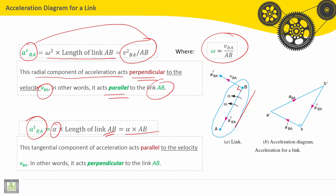This tangential component of acceleration acts parallel to the velocity V_BA. In other words, it acts perpendicular to the link AB. A^T_BA is perpendicular to AB, and it is parallel to V_BA.